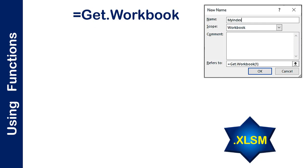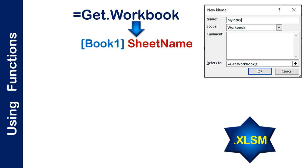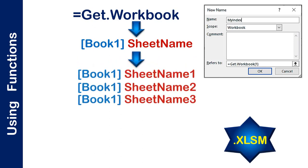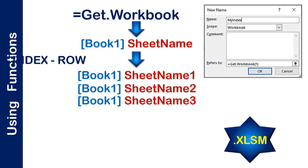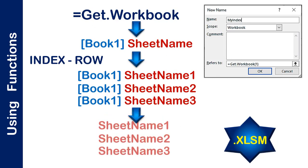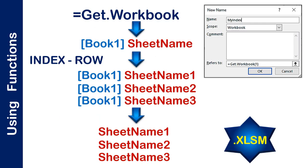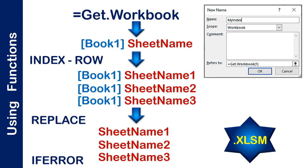If you use the type number 1, it returns the names of all the sheets in the workbook as a horizontal array of text values. Names are returned as the book name in square brackets followed by the sheet name. To display the sheet name stored in the defined name into our worksheet, we can use an INDEX and a ROW function. To get rid of the workbook name, we use a REPLACE function. And to avoid generating an error when copying our nested functions down, we use an IFERROR function.